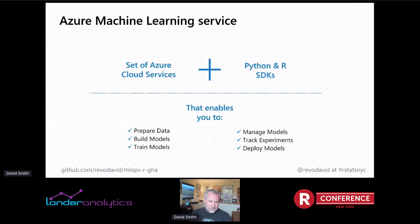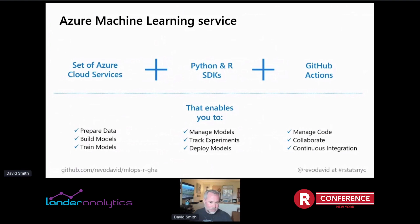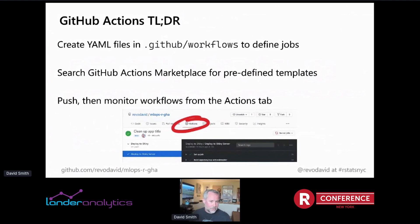In the January talk I discussed Azure Machine Learning Service — a set of Azure cloud services and Python and R SDKs. I'll be using the R SDK here for building models, working with data, training models in the cloud, finding models that work, and tracking experiments. In this talk I'm adding an extra layer by using GitHub Actions along with GitHub to manage code and collaborate with the team — using GitHub Actions for the continuous integration side of things.